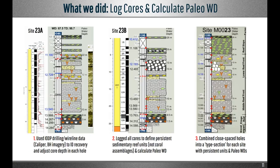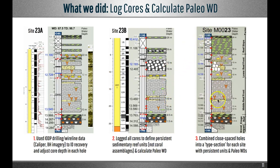To answer these questions, we went to the IODP core shack at Texas A&M University and logged all 37 cores ourselves. We used the IODP drilling and wireline data — like caliper logs and downhole imagery — to confirm core recovery and depth. We logged the cores to identify persistent stratigraphic units, not coral assemblages as was done before, and combined logs from closely spaced sites into a type section to determine the lateral persistence of the units.